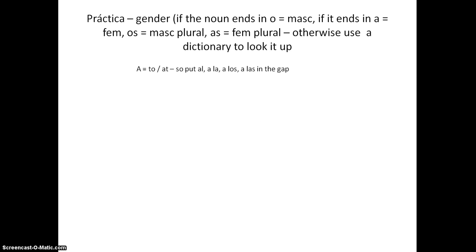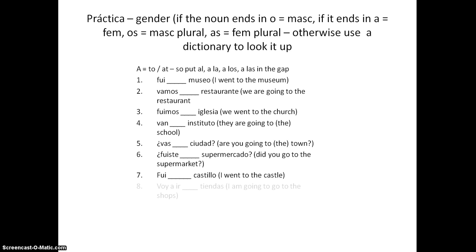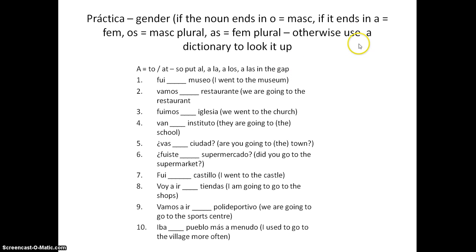What I want you to do is put AL, ALA, ALOS, or ALAS in the gaps below — there are 10 to do. I've put the English in to help you. The first one is 'I went to THE museum,' so we need to work out whether the noun is masculine or feminine and choose AL (TO THE masculine), ALA (TO THE feminine), ALOS (TO THE masculine plural), or ALAS (TO THE feminine plural).